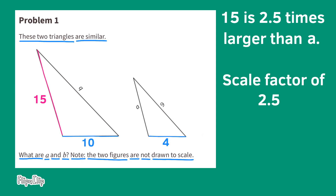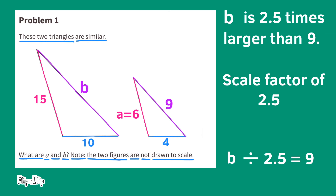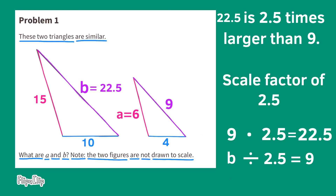Now that we know the scale factor, we can find the missing side lengths. 15 divided by the scale factor 2 and 5 tenths equals A. Since 15 divided by 2 and 5 tenths equals 6, the length for A is 6 units. Side length B divided by the scale factor 2 and 5 tenths equals 9, so we find B by multiplying 9 times 2 and 5 tenths. The missing side length for B is 22 and 5 tenths.